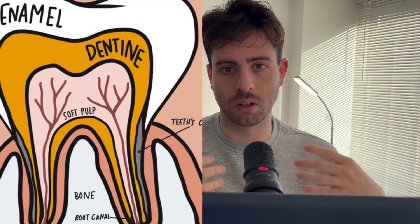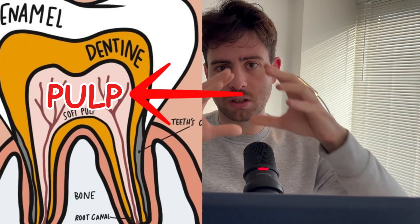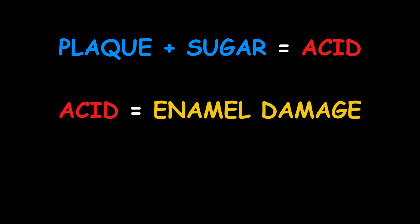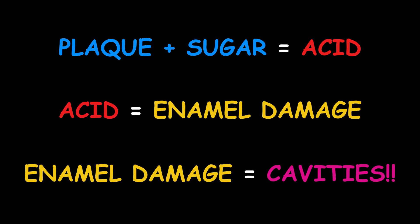If a cavity is left untreated, it can grow deeper and deeper until it reaches the center of the tooth — the pulp, also known as the nerve — which contains nerve tissue and blood vessels. Once it reaches there, you can start getting symptoms like pain, sensitivity, and infections, to the point where you may need a root canal or potentially lose the tooth altogether. In simple terms: plaque plus sugar equals acid, and acid equals enamel damage, which causes cavities. Think of sugar as fuel for a fire, bacteria as little sparks, and acid as the flames — the more sugar you add, the bigger the fire gets.